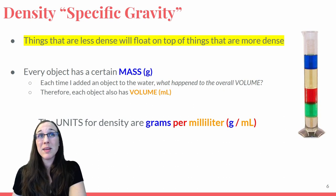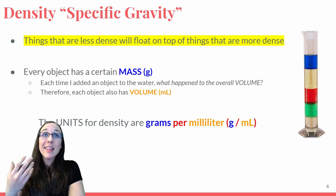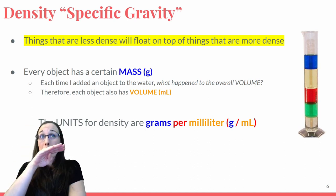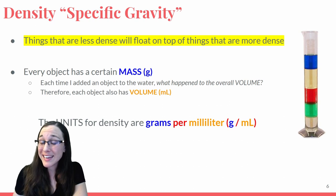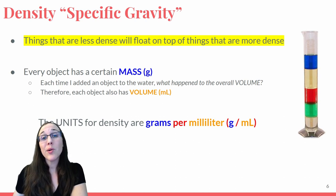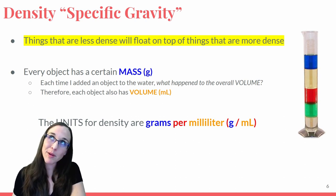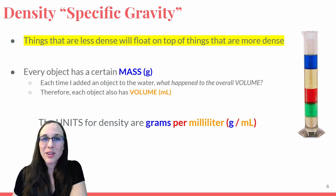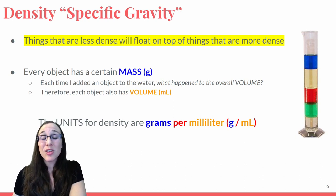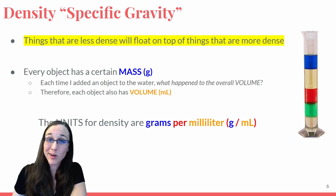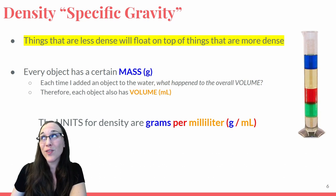Just like a speed limit is miles per hour with miles above and hour below, density has units of grams per milliliter with grams on top and milliliter on the bottom. Knowing your units in chemistry can make or break a problem — and not just in chemistry, but in real-world scenarios as well. We'll be covering conversions, such as miles per hour to kilometers per hour, which are especially important if you like to travel outside the United States.